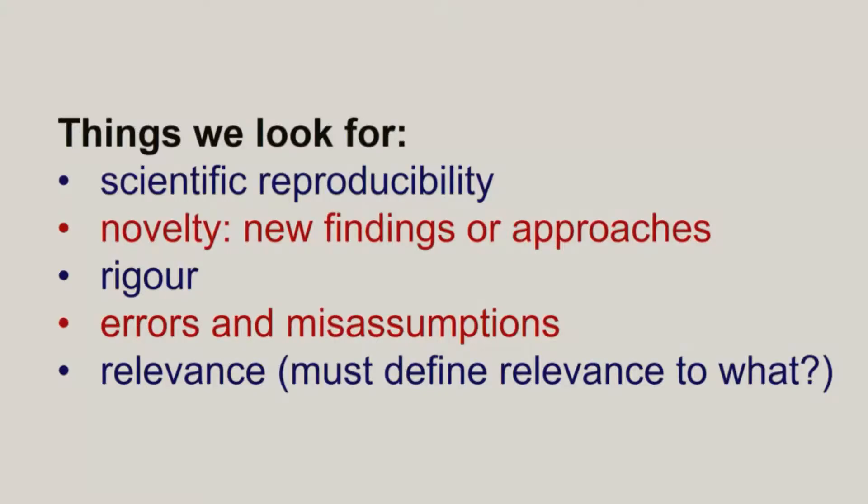Finally, we need to think about relevance, especially in these days where research is often very critically evaluated in terms of what benefit it is to society. Especially where research costs money, it is necessary to consider how relevant the research is to the needs of society. So we often talk about pathways to impact — what impact is the research likely to have? But to evaluate relevance, we also need to consider relevance to what, and define the context in which we are evaluating.